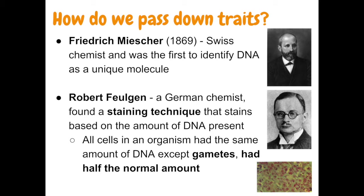There's another scientist from 1914, Robert Feulgen. He came up with a staining technique used for being able to see DNA inside the nucleus of a cell — he was also a German chemist. He used a device called a microspectrophotometer to measure the intensity of this stain he put on cells. The stain, which is pink, stains one specific part of the cell: the nucleus.